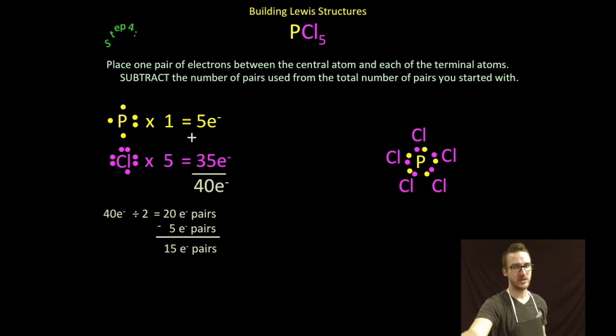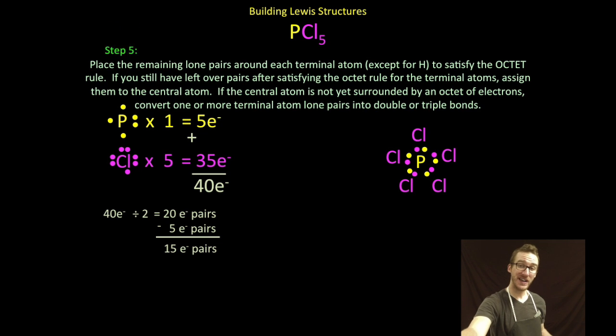I've got 15 pairs of electrons left over. Now, I'm checking to make sure that my atoms have an octet. I've got 15 pairs left over. The first place I'm going to put them are on my terminal atoms.